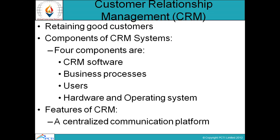The second component is business processes — how we use our CRM system. There are three types of business levels: strategic planning, management control, and operational control.